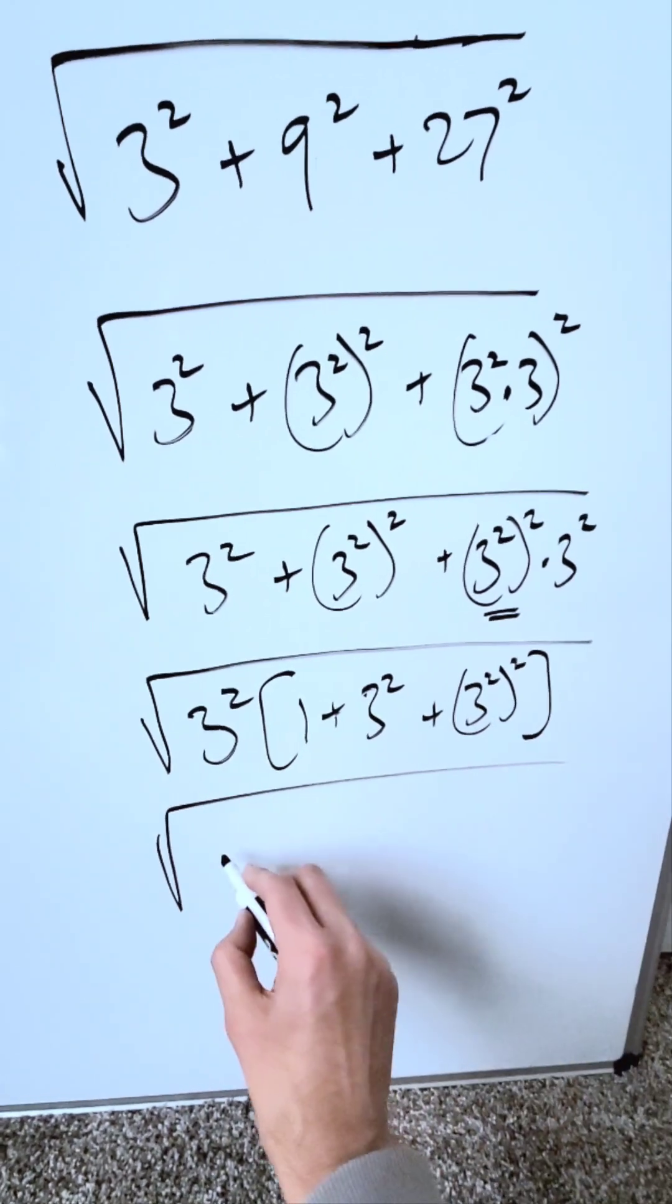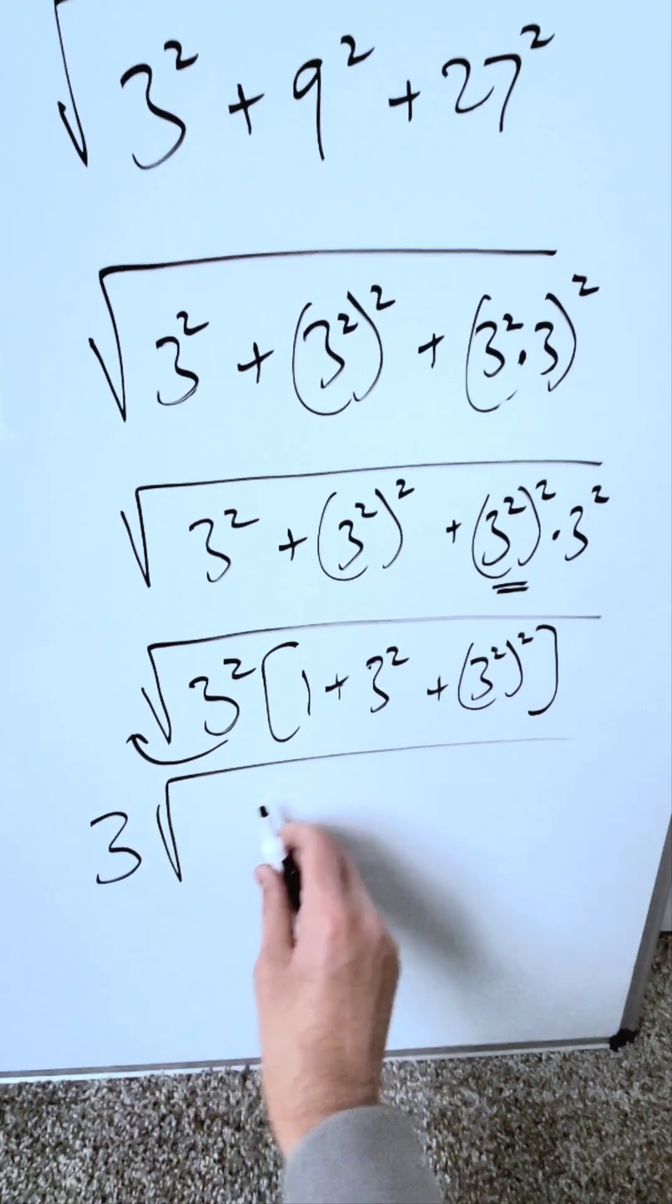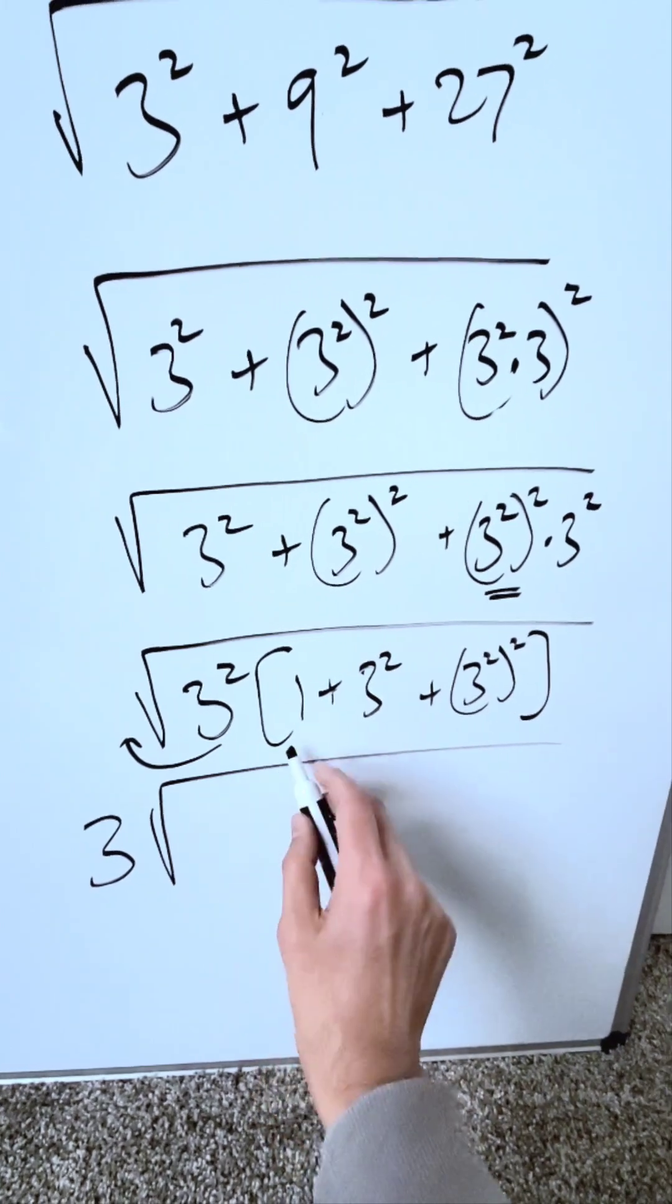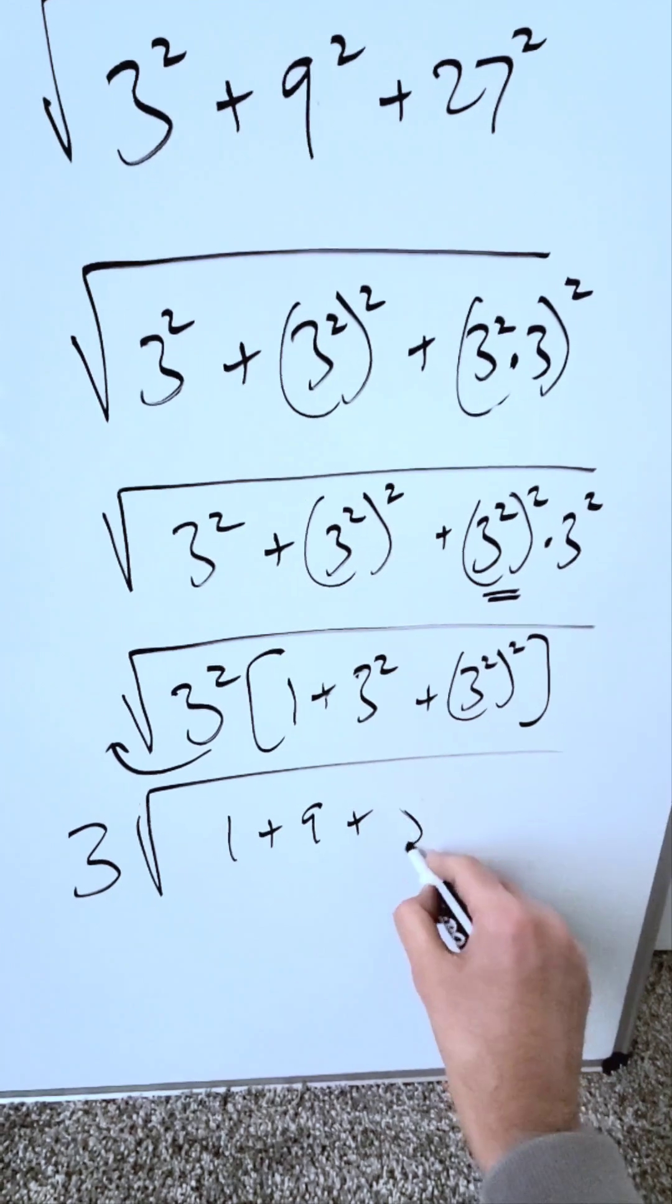We're very close to being done. We have 3 squared which is a 9 root coming out as a 3 multiplied by everything over here. What will those items be? 1 plus 9 plus... Look, 3 squared is 9. Squared is 81.